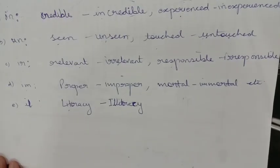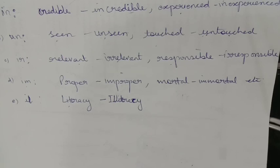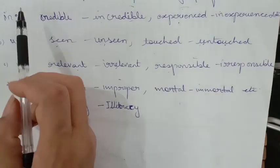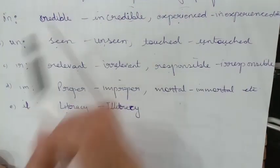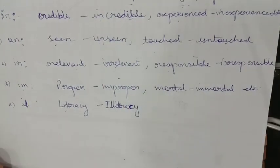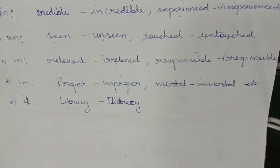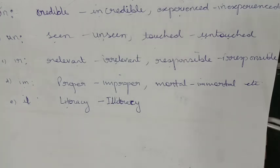Now if you want to form an adjective by adding a prefix, you will add letters at the beginning of a word and you will get an adjective. The prefix I-N: 'credible' becomes 'incredible'; 'experience' becomes 'inexperienced'. The prefix U-N: 'seen' becomes 'unseen'; 'touch' becomes 'untouched'. The prefix I-R: 'relevant' becomes 'irrelevant'; 'responsible' becomes 'irresponsible'.